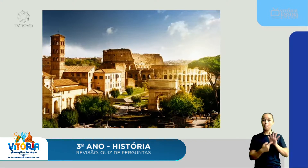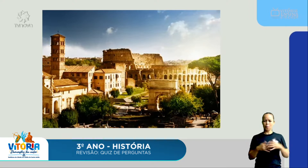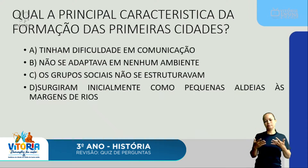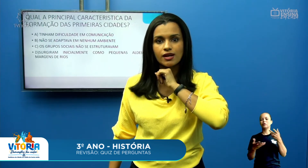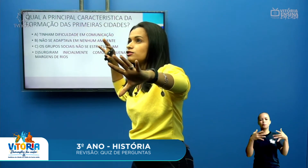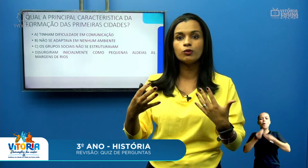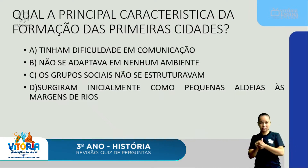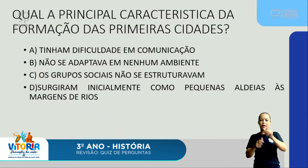Trouxe uma imagem aqui para vocês para começar a nossa revisão. Olhando para essa imagem, o que você vê? Uma cidade antiga? Prédios antigos? Qual a principal característica da formação das primeiras cidades? Letra A: tinha dificuldade em comunicação. Letra B: não se adaptava em nenhum ambiente. Letra C: os grupos sociais não se estruturavam. Ou letra D: surgiram inicialmente como pequenas aldeias às margens de rios?